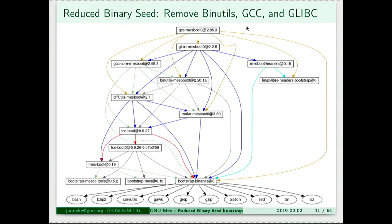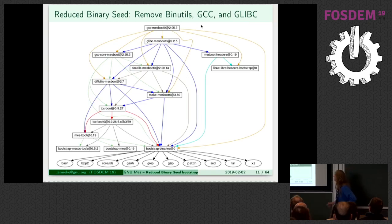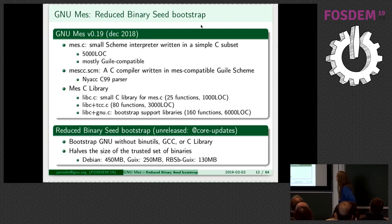What does it mean to reduce the binary seed bootstrap? Well, one of the biggest thing in the bootstrap is GCC and the tools it needs. So, we simply replace GCC. This is the current reduced bootstrap graph. We will use the upcoming version of Geeks. Here is the first version of GCC, version 2.95.3, which is actually built from source by this chain. And MES is one of the first binary seed bootstraps. The reduced binary seed bootstrap reduced the binary seed that we use to bootstrap Geeks from 150 megabytes to about 130.